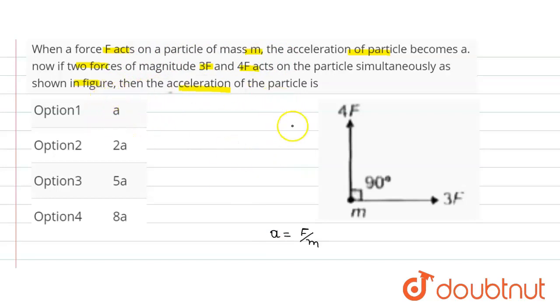And when two forces 3F is acting here, so acceleration will be 3F. This will be 3a, okay, 3a. And in this direction 4a acceleration, because in the question given if F force is acting on a mass m then acceleration a.